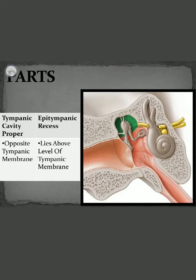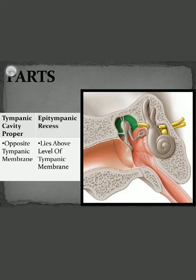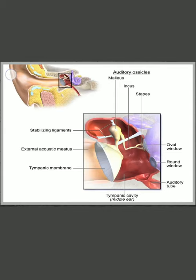The tympanic cavity is divided into two parts: tympanic cavity proper and the epitympanic recess. The portion of the tympanic cavity just opposite to the tympanic membrane is known as the tympanic cavity proper. The portion above the level of the tympanic membrane, highlighted in green, is the epitympanic recess.